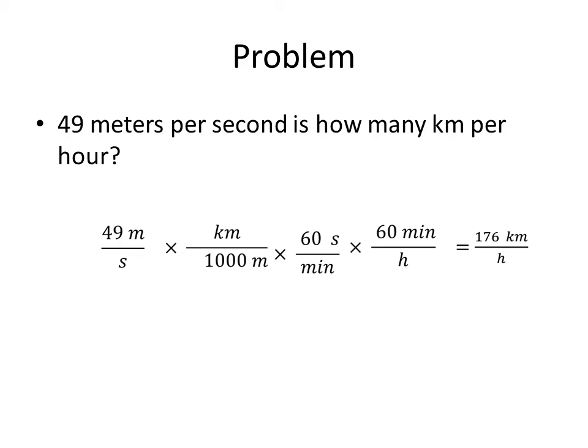And after I do this math, 49 divided by 1,000 times 60 times 60, you should get 176 as your answer. And notice how the units work out. Meters cancels out. Minutes cancels out. Seconds cancels out. The units that remain are kilometers over hours, which is what answers the question.